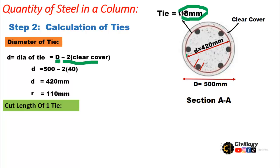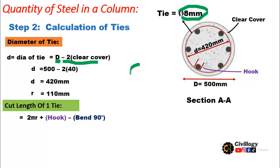The cut length of one tie means how much length of steel is required to make one circular tie. It equals 2πr (the circumference) plus hooks. As you can see, there are two hooks and two 90-degree bends. The hook length should be 10 times the diameter of the bar, and the bend deduction for a 90-degree bend is 2 times the diameter of the stirrup bar.